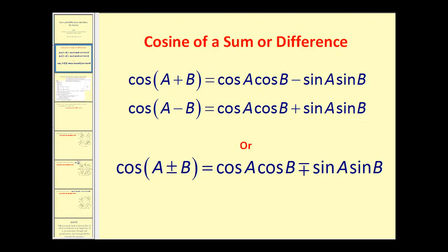If we have the cosine of a sum or difference, here are the identities. The cosine of the quantity a plus b is equal to cosine a times cosine b minus sine a times sine b. And if we have a difference, it is equal to cosine a cosine b plus sine a sine b.